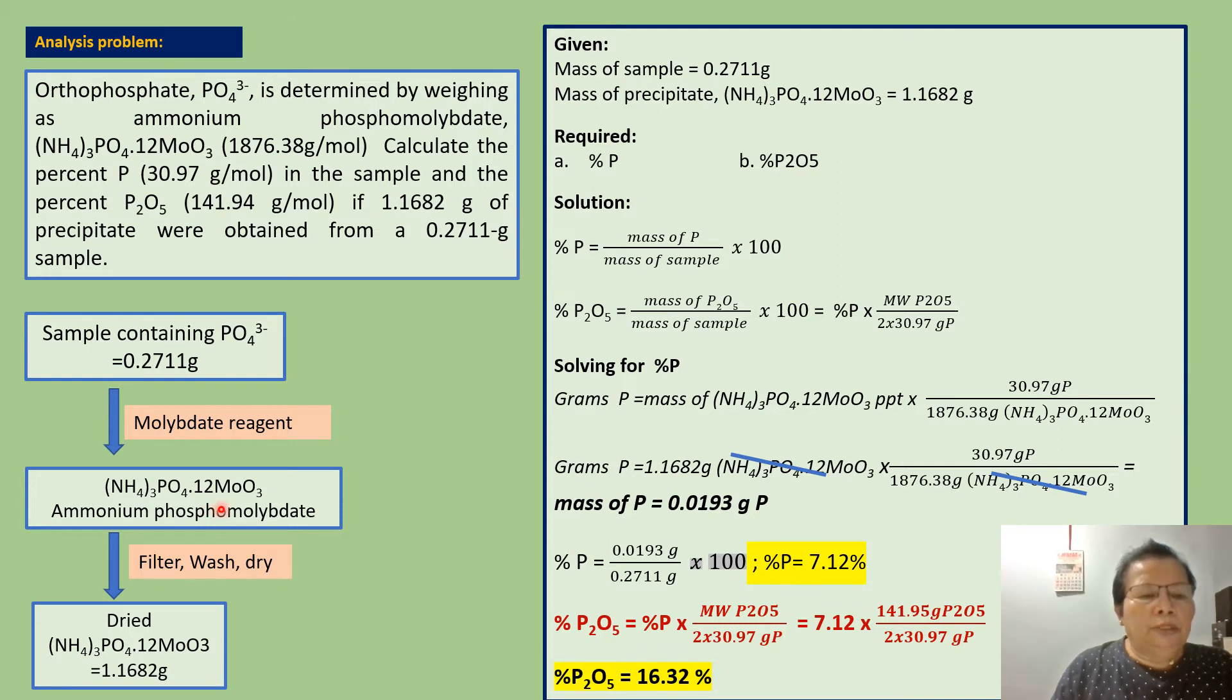Then we dry this in the oven to completely remove moisture. The end product of this analysis is the dried ammonium phosphomolybdate and the mass of this precipitate is 1.1682 grams.